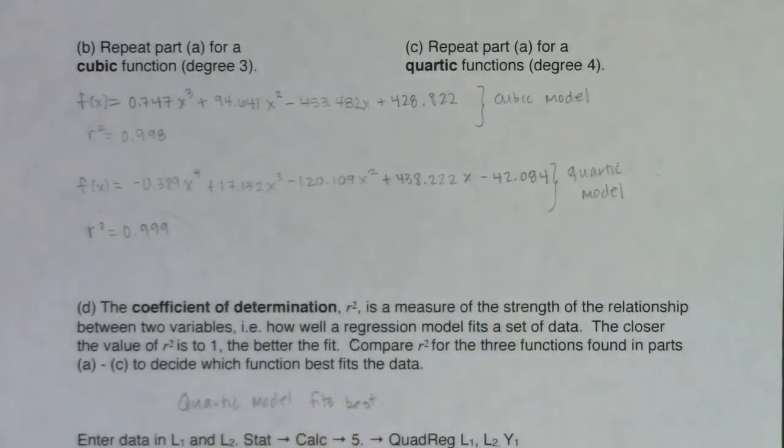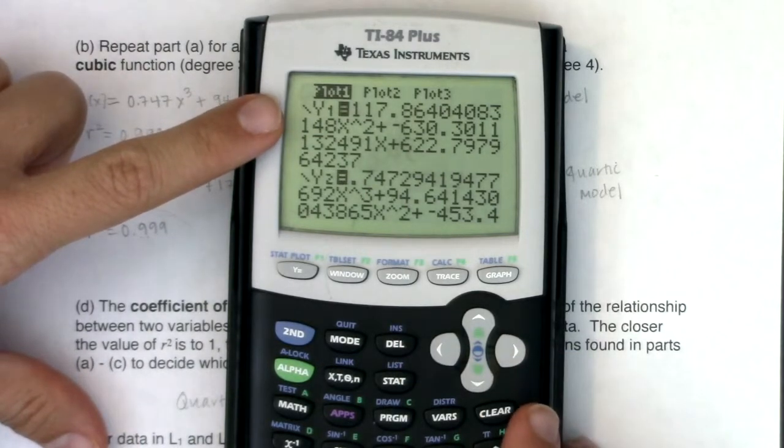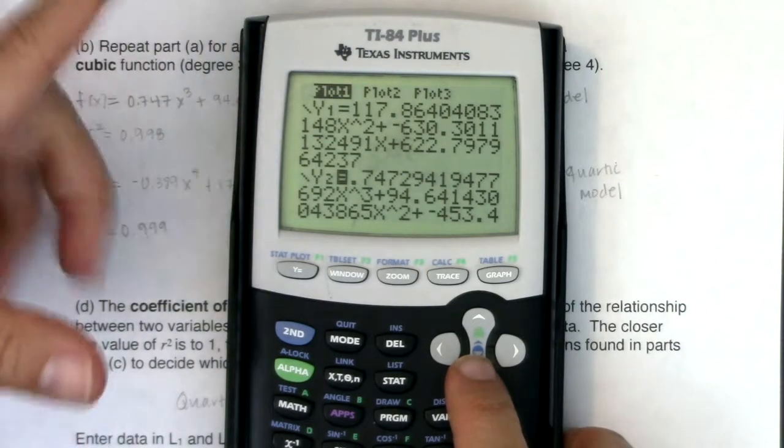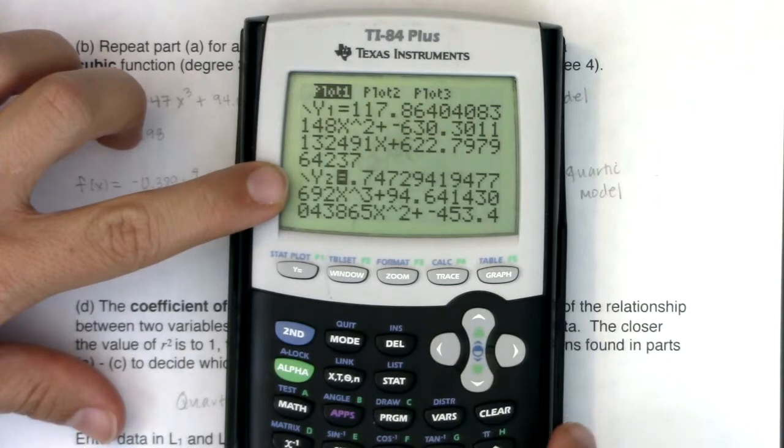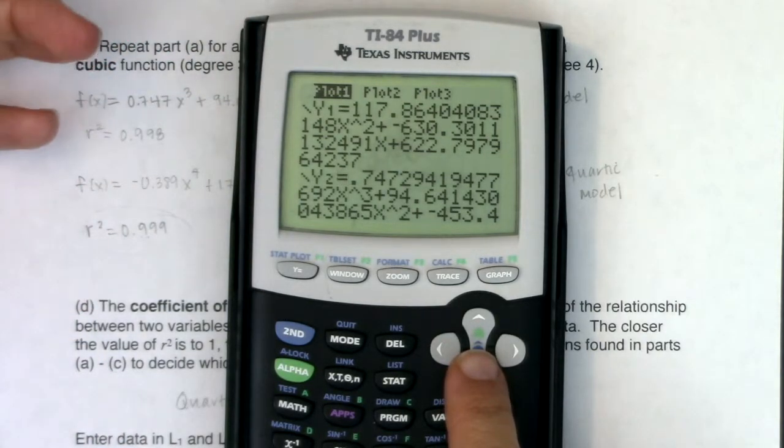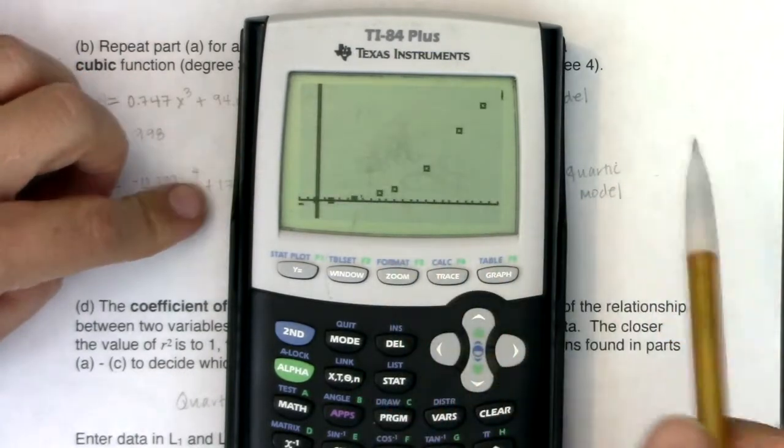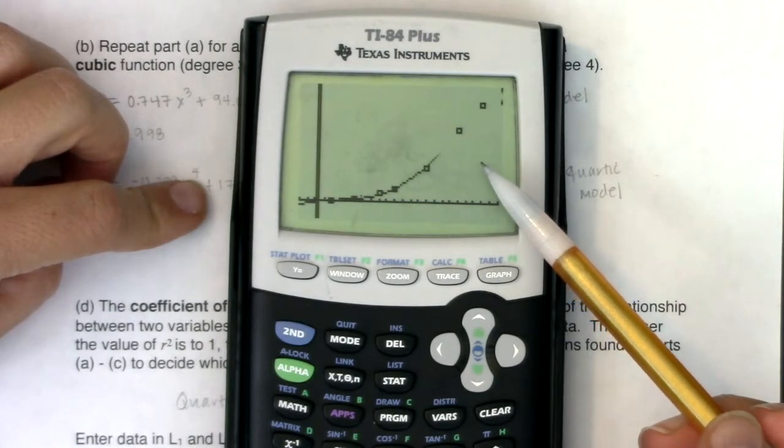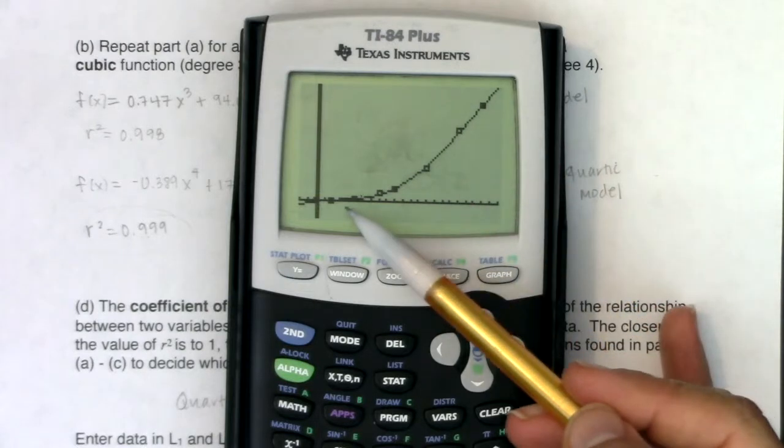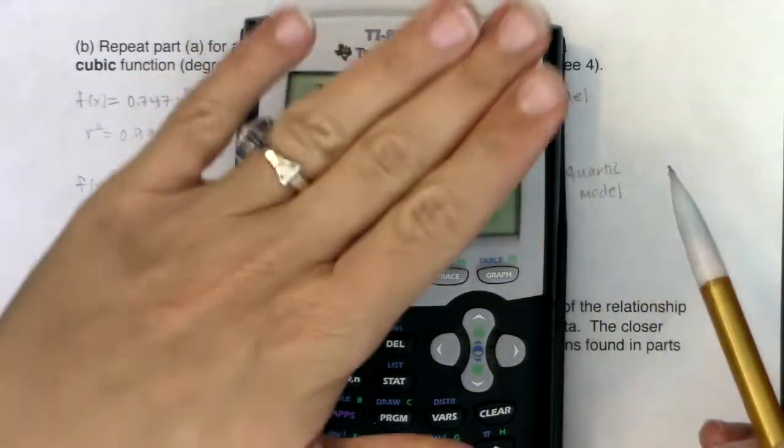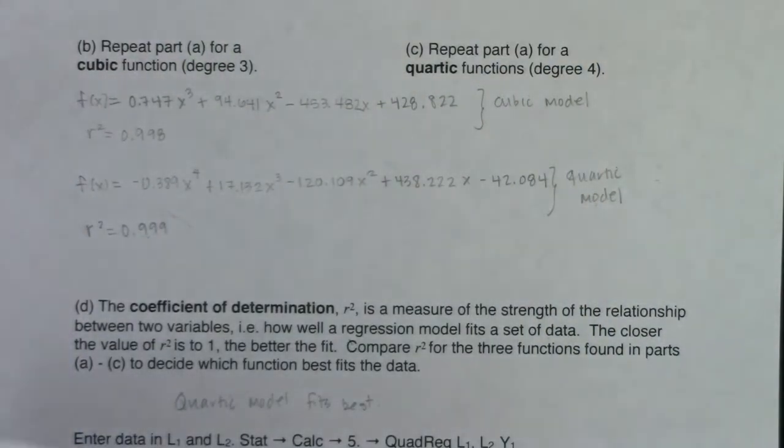So then what I would do - I dropped that quartic model into Y3. I can go over here and turn Y1 off. If I hover over the equal sign, I hit the left arrow key and hit enter. That equal sign no longer has a black background. I turned the quadratic model off. Now I'm going to turn the cubic off the same way. The only one I've left on is this beast of a quartic model. If I hit zoom nine, the only thing that's going to show up is that quartic model. You can see it's doing a pretty good job of hitting those points really well.